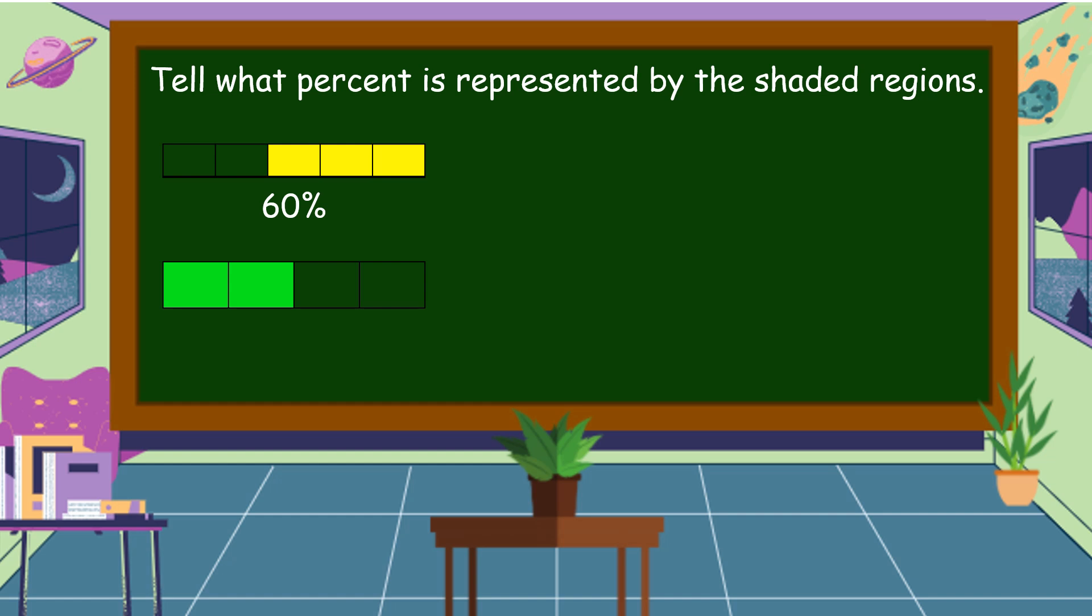For the next figure, it is divided into four equal parts. So 100 percent divided by four is equal to 25 percent. Each part is equal to 25 percent. Then, what percent is the shaded regions? Very good. The answer is equal to 50 percent.